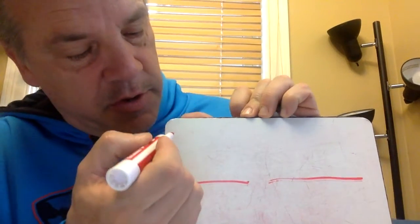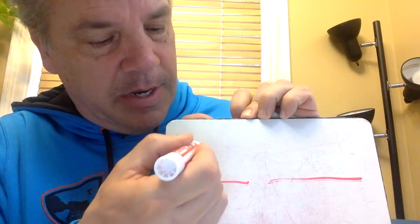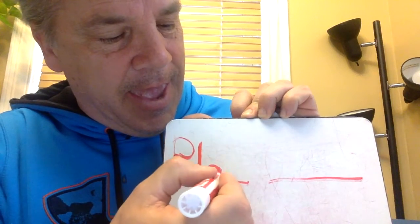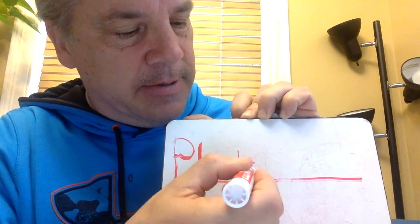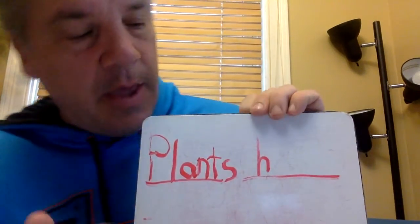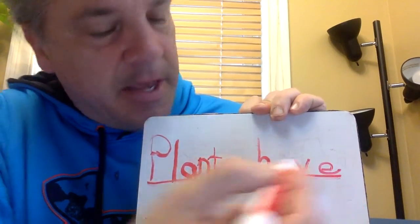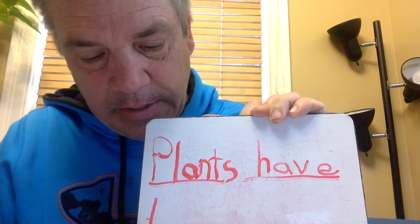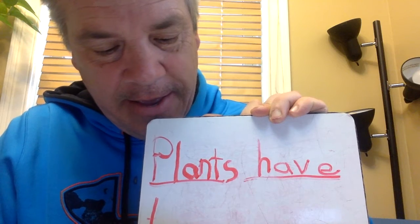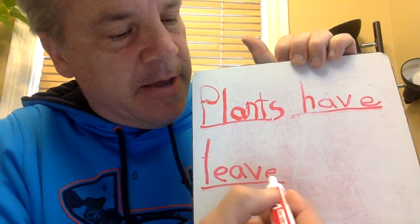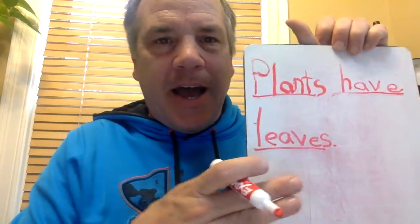We've written about the roots and the stem. Today we need to write about leaves. We'll have the word 'plants' throughout the book. Then we have leaves — I'm going to let you draw your picture when we're finished with our writing.